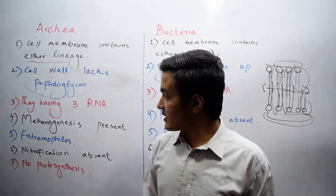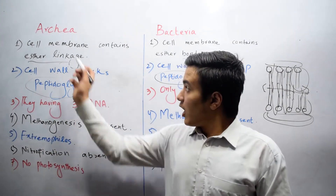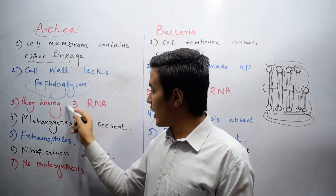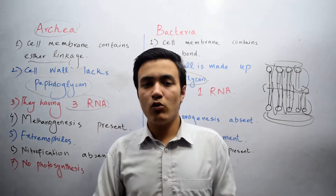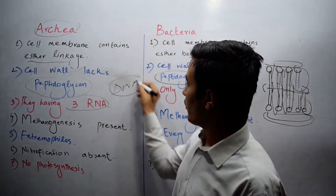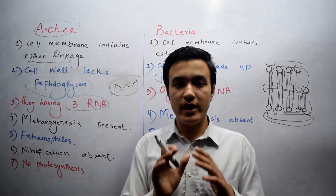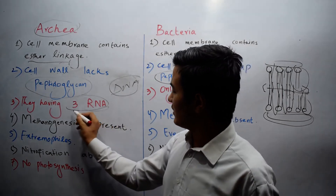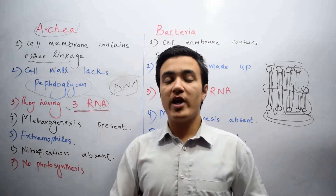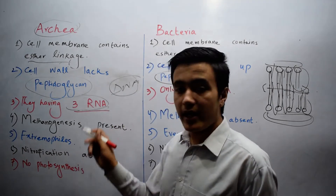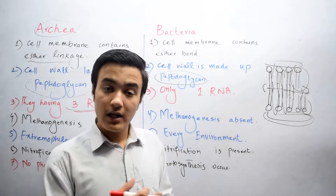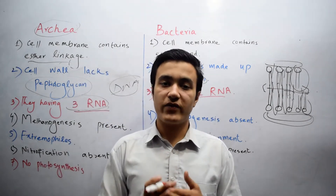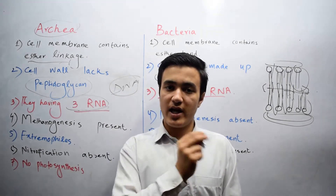Coming to the third difference: Archaea have three RNAs and basically behave like other eukaryotic organisms. This RNA will laterally convert into DNA. RNA is single-stranded while DNA is double-stranded. The three RNAs will combine to make DNA and it will behave like other eukaryotes. While Bacteria consists of only one RNA, and Bacteria is completely different from eukaryotes.